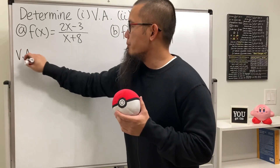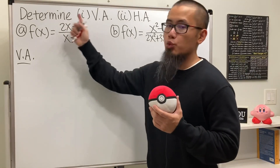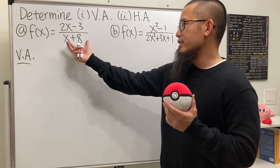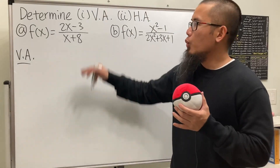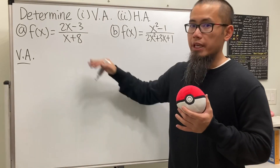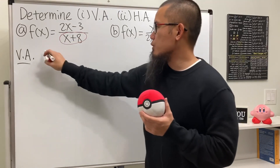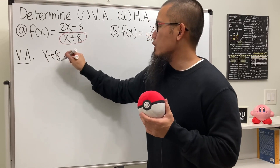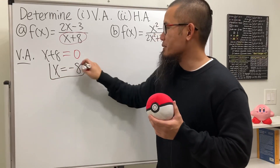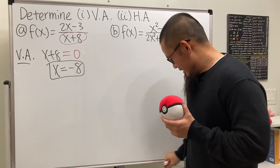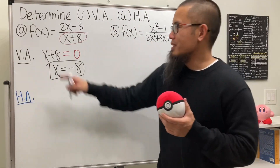When we are doing this, you have to keep in mind that we must do it after we have reduced the rational function. But since there's nothing to reduce, we can just go ahead and get to work. The idea is that we need a non-zero over zero to get a vertical asymptote. So we just look at the bottom: set x plus 8 equal to 0, solve for x, and x equals negative 8.